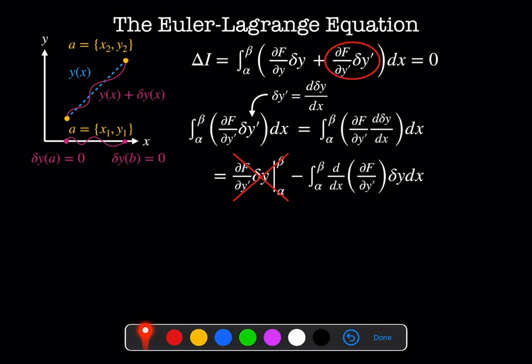We're left with just minus d by dx of df by dy prime delta y. And that will go in place up here. So our total delta I is now this integral here. So we've got the integral from alpha to beta of df by dy minus d by dx df by dy prime times delta y dx.